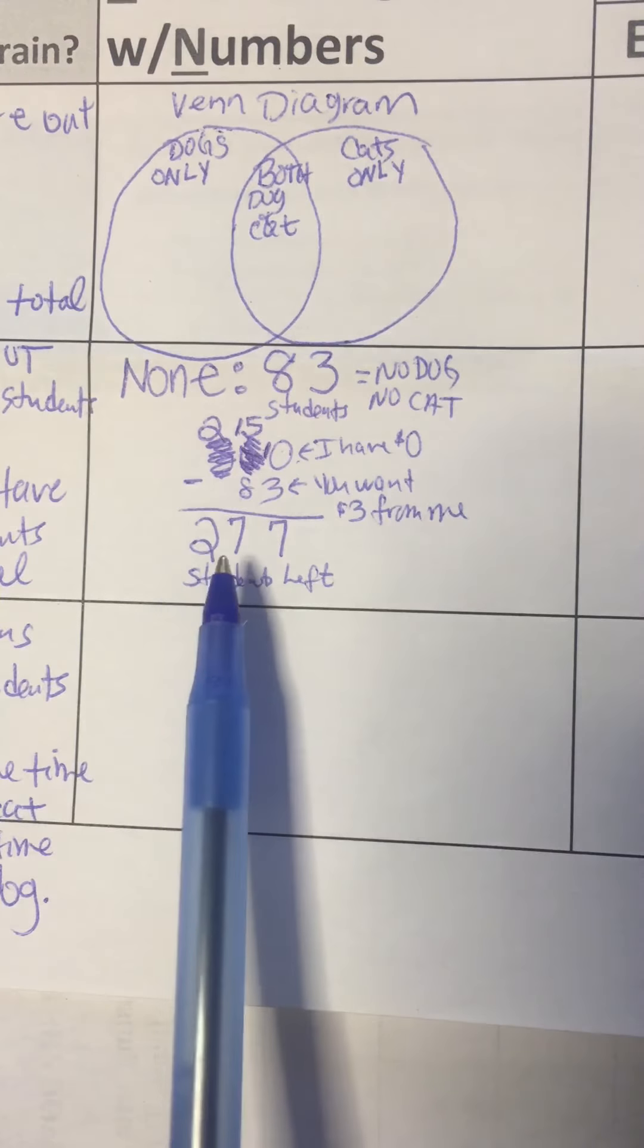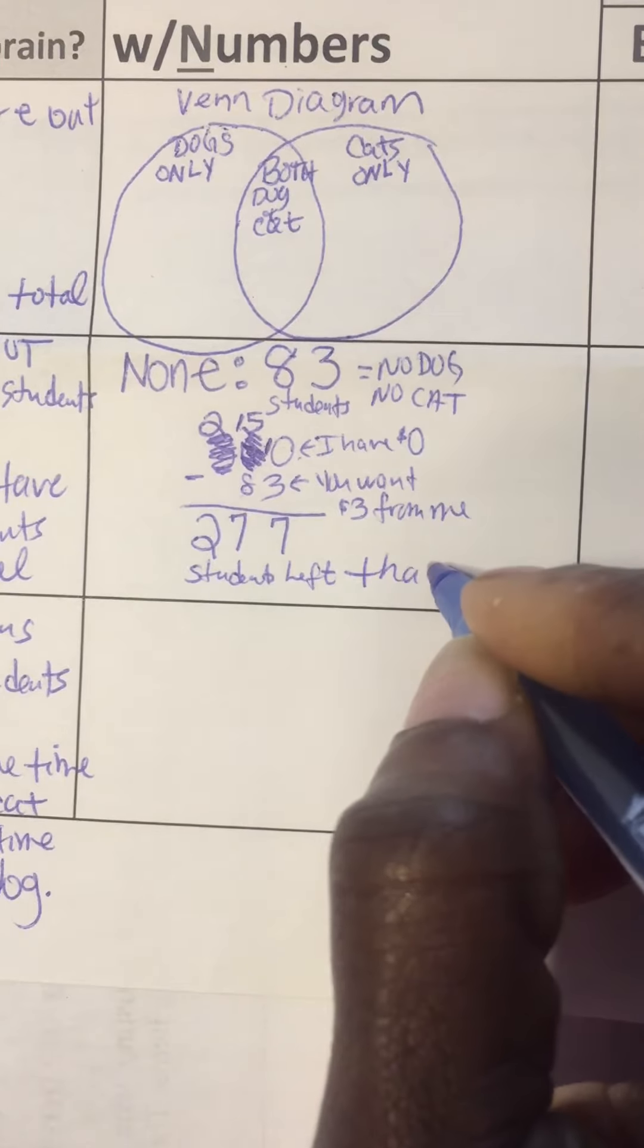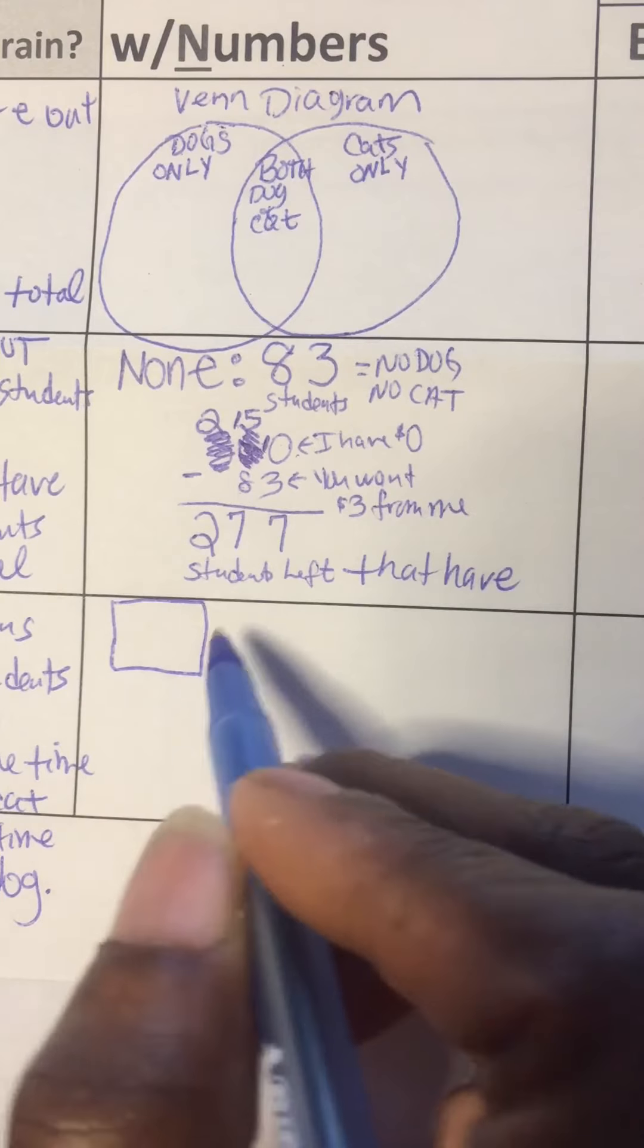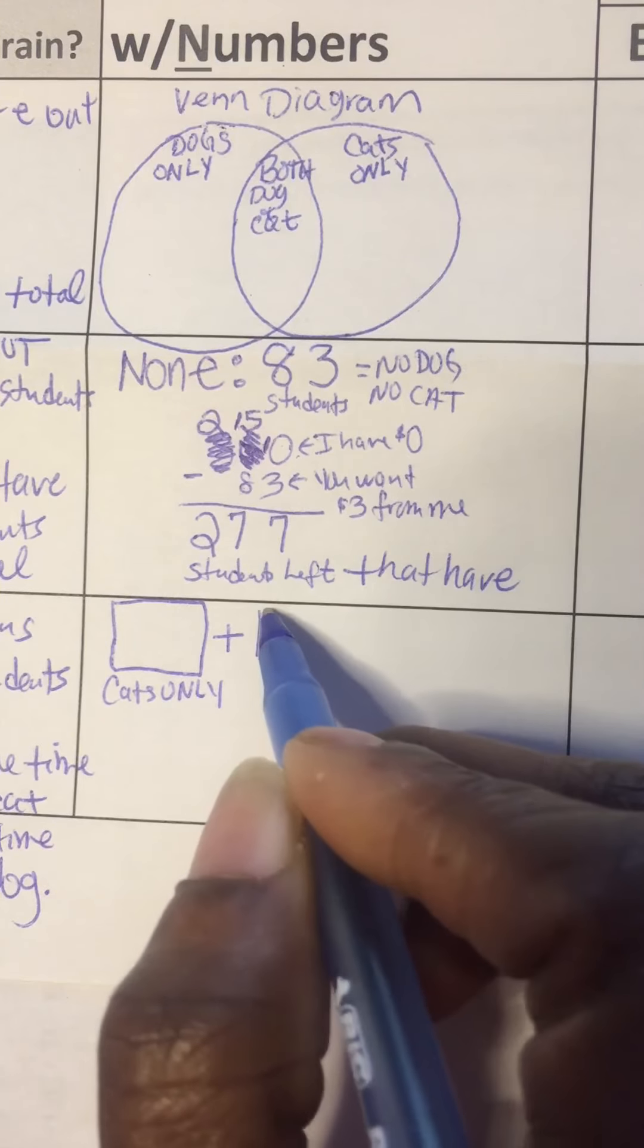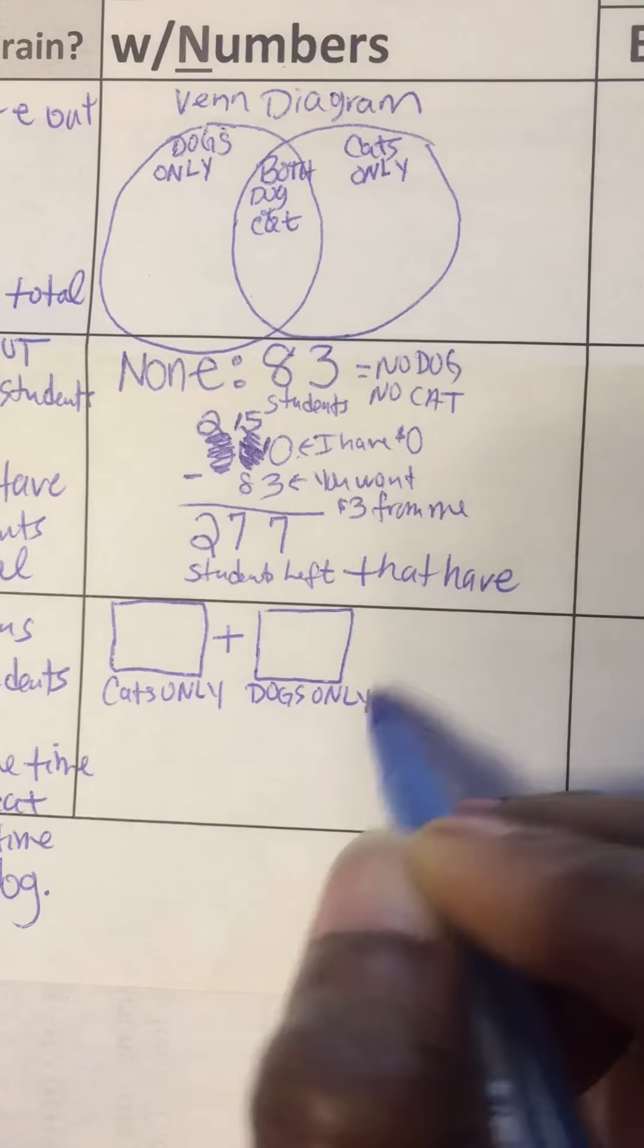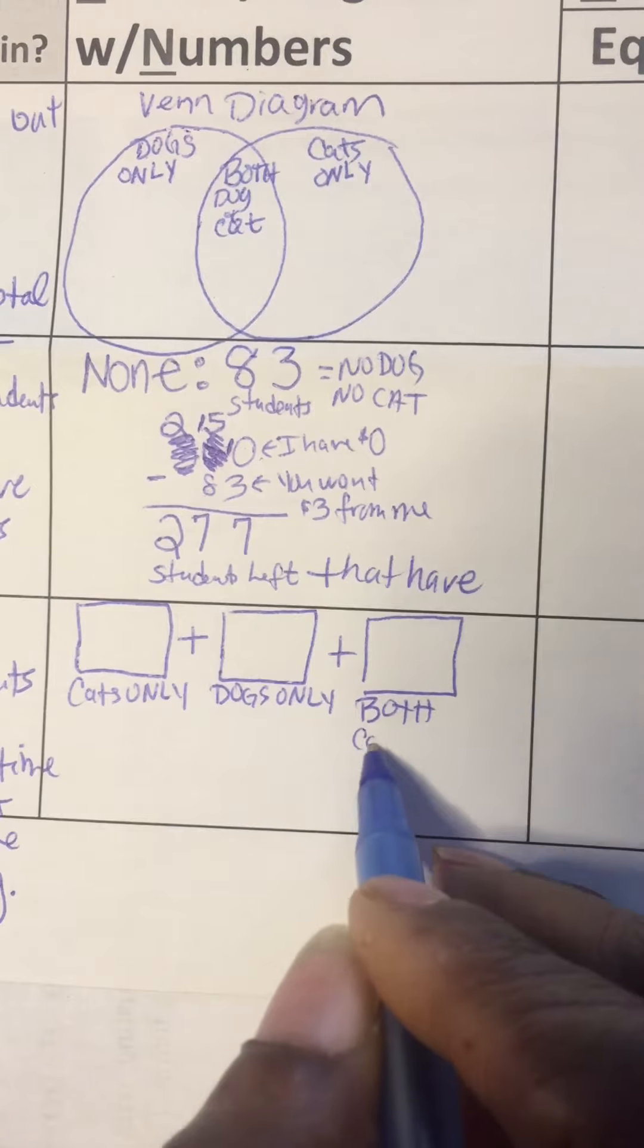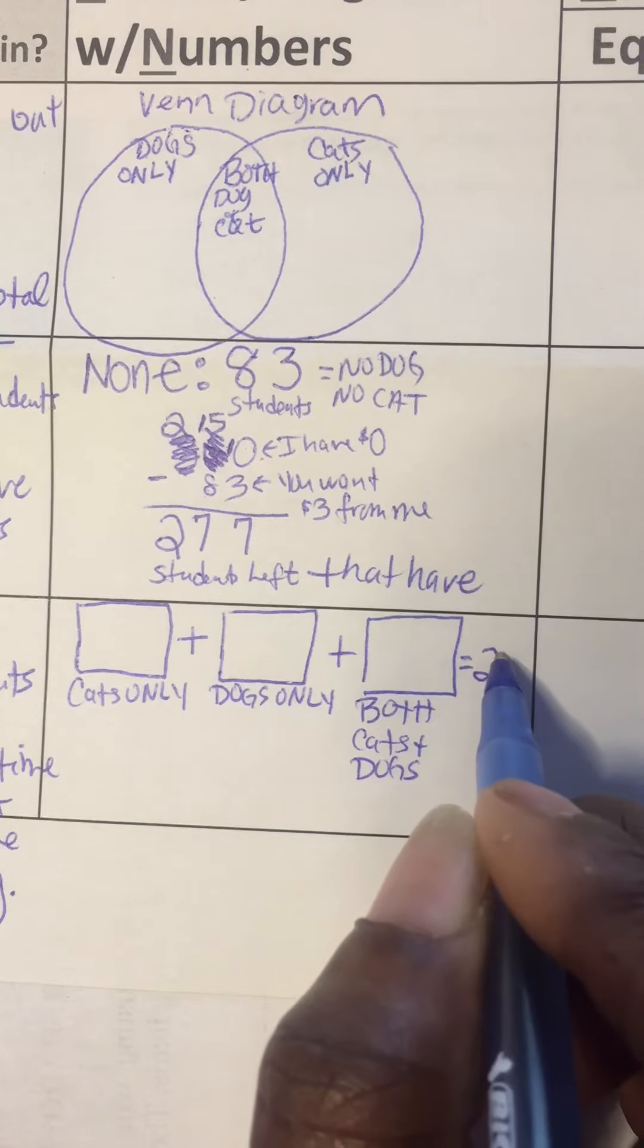Okay, so we have 277 students left that have three categories. You have 277 that have cats only, dogs only, plus both cats and dogs. And all three of those are going to add up to 277.